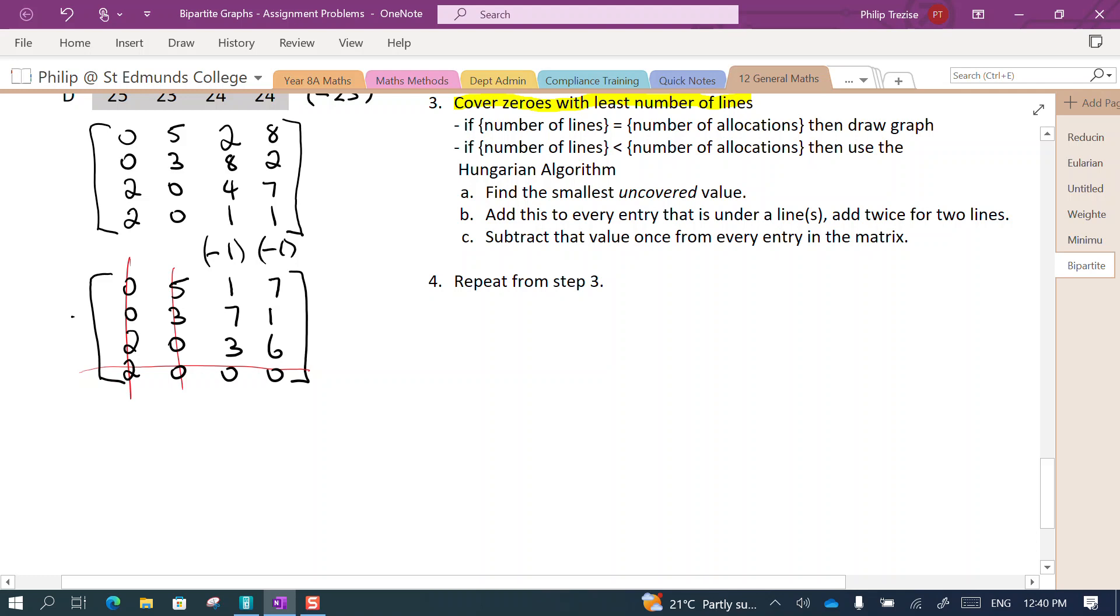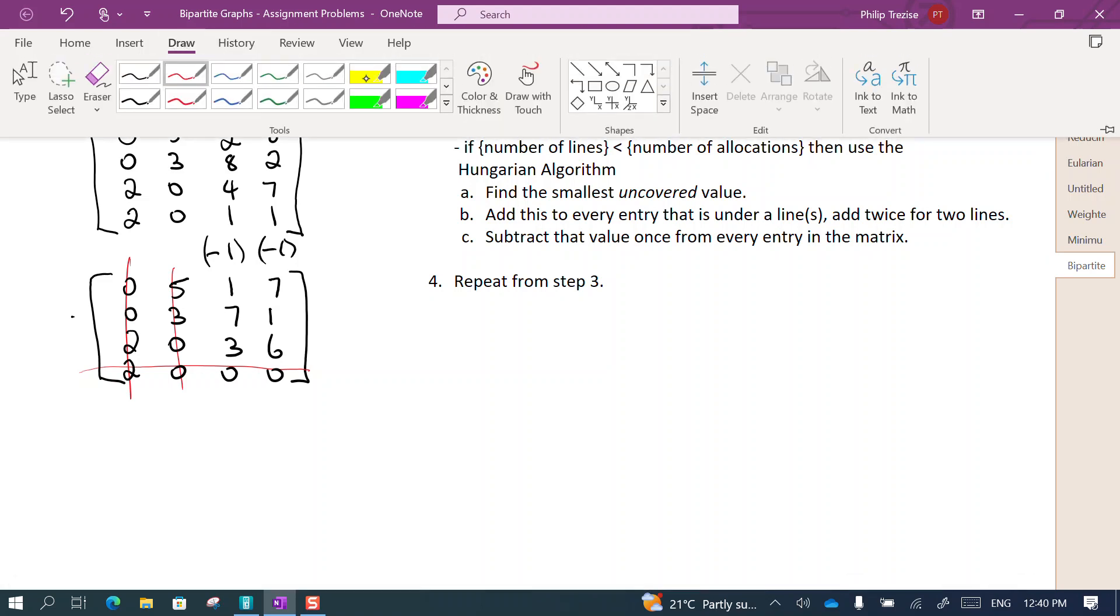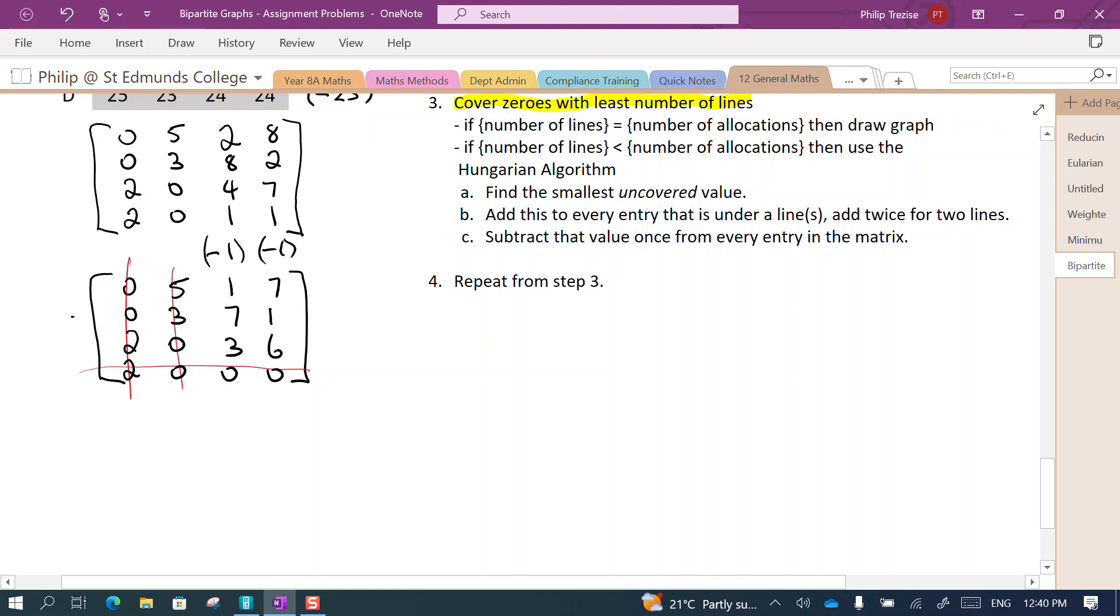They're all covered. I used three lines but I have four allocations to make, don't I? So the number of lines here is three, the number of allocations is four. There are four people. The number of allocations is the size of the matrix. So I'd probably make a little note here in my working that I had three lines which is less than the four allocations that I need to make.